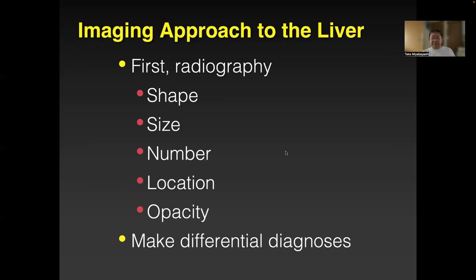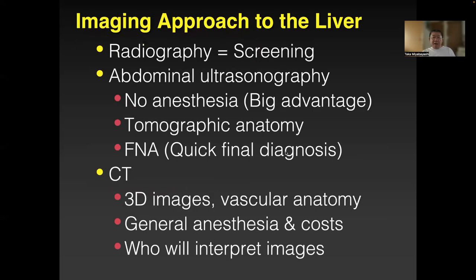Summary of the imaging approach to the liver: first radiography — shape, size, number, location — make a differential diagnosis. Then go to ultrasound: no anesthesia needed, you get tomographic and topographic anatomy. If you need FNA, that gives a quick final diagnosis. CT is now widely available in Japan and provides excellent vascular anatomy.